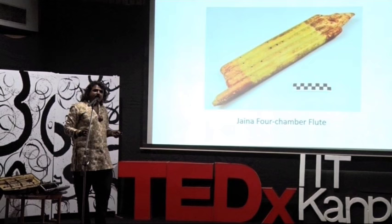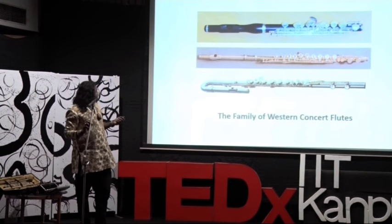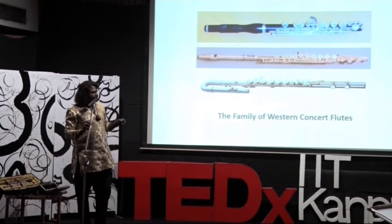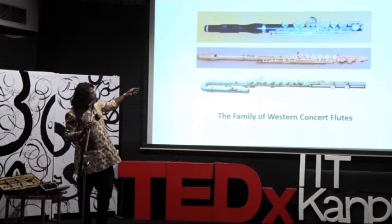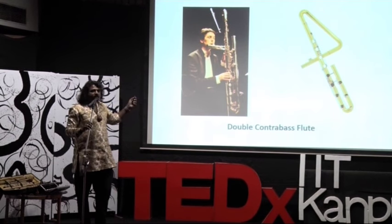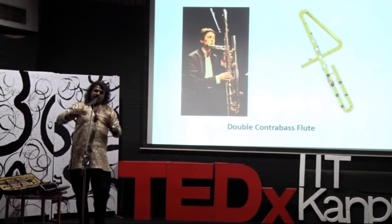Then there were multiple flutes. In the Indian tradition you will find multiple flutes — two flutes in several parts of Rajasthan. It's called Algoja. This is the modern English flute, or the Western flute. That's the modern English flute with lots of keys. And this is a double contrabass flute. Just like in the family of violins you have violin, viola, cello, double bass, and contrabass — the size goes on increasing.